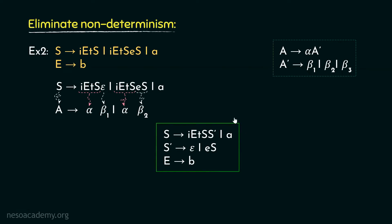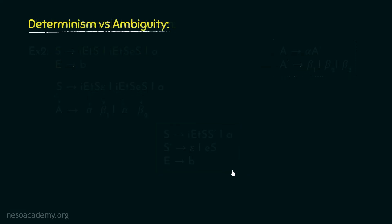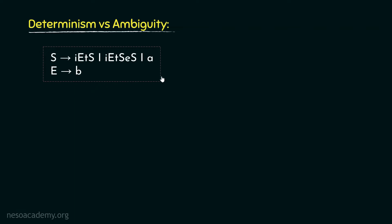This grammar will not suffer from non-determinism. But will it be accepted by top-down parsers? The answer is no. If we recall from previous sessions, except for the operator precedence bottom-up parser, all other parsers — whether top-down or bottom-up — reject ambiguous grammars. Now, this is the non-deterministic version of the grammar, whereas this one is the deterministic one.